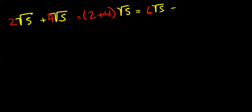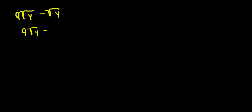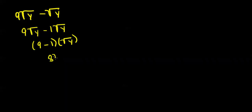Remember you can only add or subtract if you have like radicals. Now let's look at another example: 9 radical y minus radical y. You can see that they have like radicals, so we can go ahead and subtract. You want to imagine that there is a 1 in front of the radical y, so 9 minus 1 times radical y, which leaves us with 8 radical y.